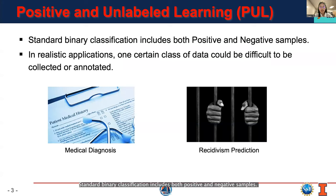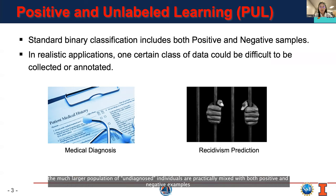Standard binary classification includes both positive and negative samples. However, in realistic applications, one certain class of data could be difficult to be collected or annotated. For example, in medical diagnosis, while we might safely consider a diagnosed patient to be positive,